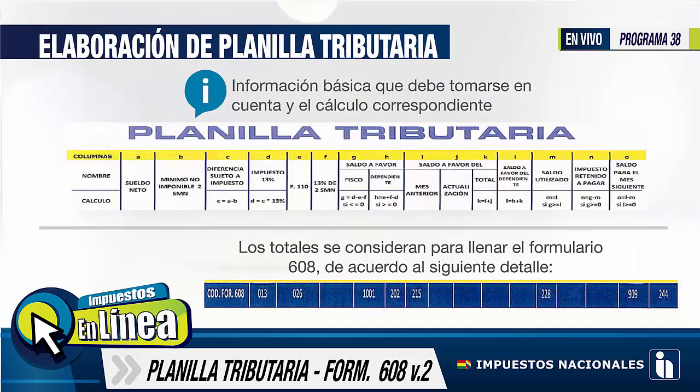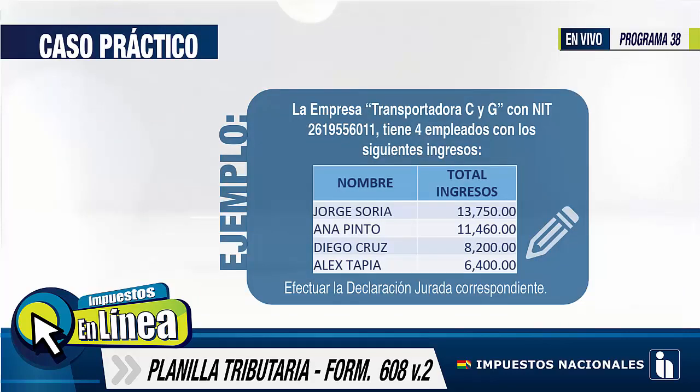Seguimos con la elaboración de la planilla tributaria. En estos dos gráficos que ustedes observan, como primer gráfico, tenemos la información básica que debe tomarse en cuenta y también el cálculo correspondiente. Seguidamente, tenemos otro gráfico en el cual señalan los totales de la planilla tributaria que deben considerarse para llenar dentro del formulario 608. Ahora veremos el caso práctico. La empresa transportadora CIG con NIT 2619-55-6011 tiene cuatro empleados con los siguientes ingresos.